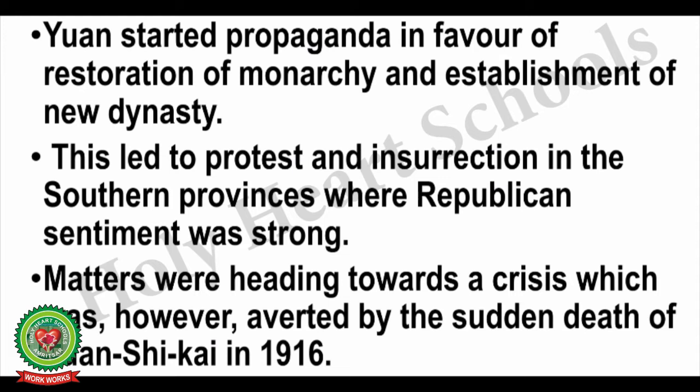This led to protest and insurrection in southern provinces where republican sentiments were strong, as the people there were more inclined towards republican government and strongly opposed Yuan's idea of China becoming a monarchy again. A crisis was averted by the sudden death of Yuan Shikai in 1916, which prevented a civil war between supporters of monarchy and the republicans.